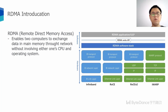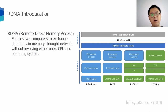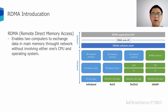This picture shows three technologies that support RDMA, including InfiniBand, Ethernet RoCE, and Ethernet iWARP. The InfiniBand network is specially designed for RDMA to ensure reliable transmission at the hardware level. This technology is advanced but the cost is high. RoCE and iWARP are both Ethernet-based RDMA technologies, which enable RDMA to be deployed on the most widely used Ethernet. In this talk, we mainly focus on the RoCE technology.